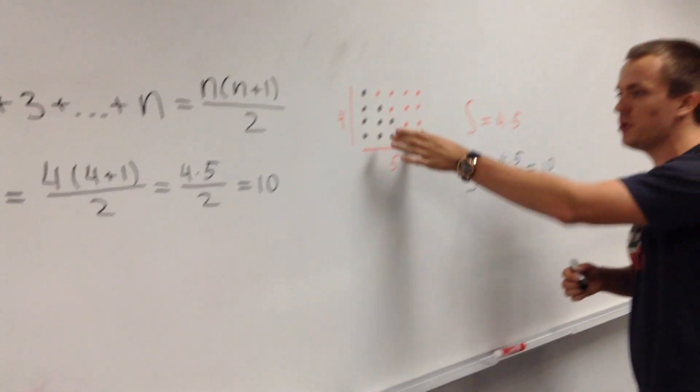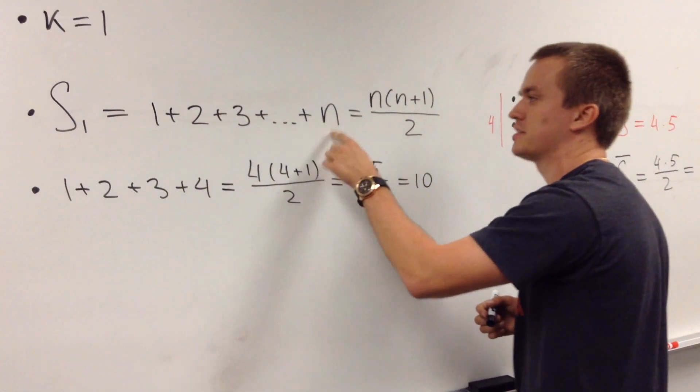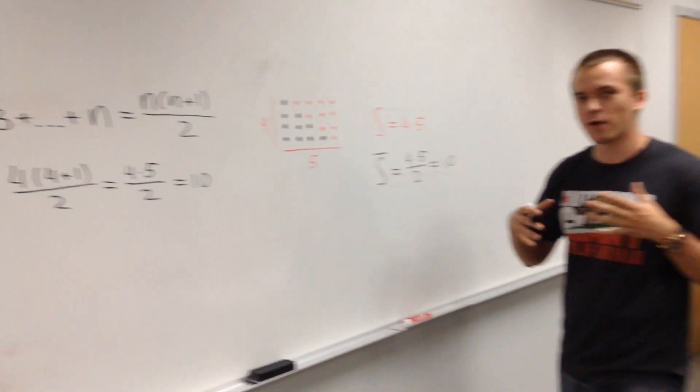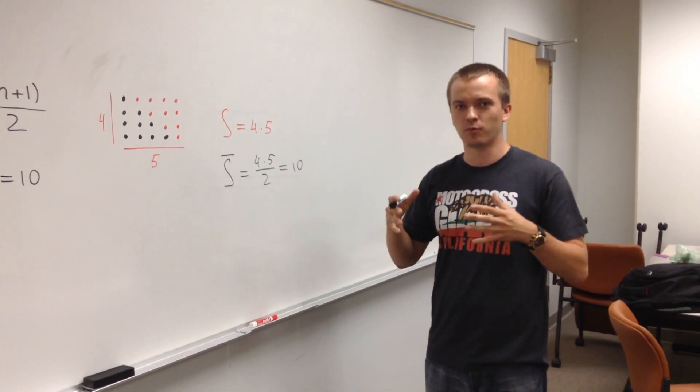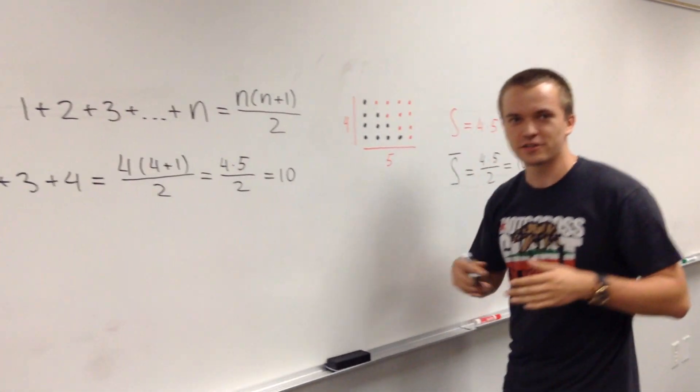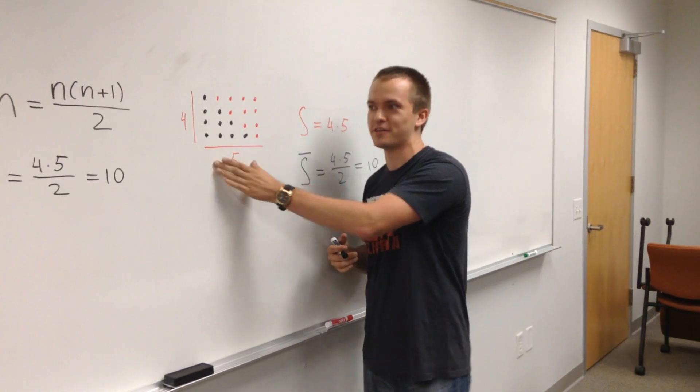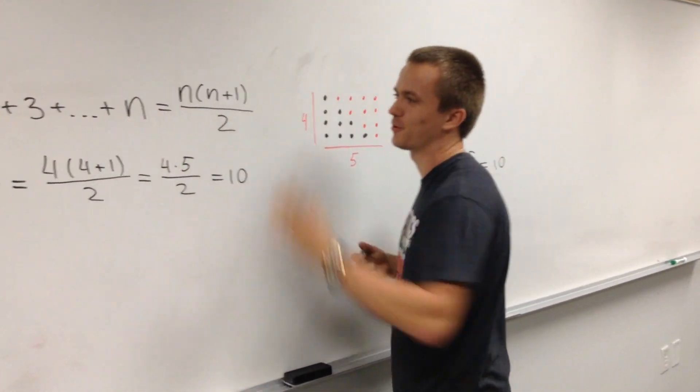And the same argument you can use in the case when you have 1 plus 2 plus 3 dot dot plus n. So there's 2 ways how you can prove some math formulas. There's a really technical algebraic way when you're just using some algebra, and there's like geometry, really beautiful and nice way when you can see the picture that stands behind this beautiful formula.